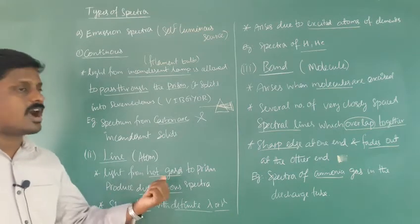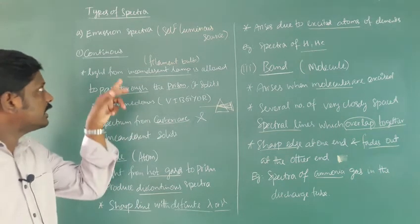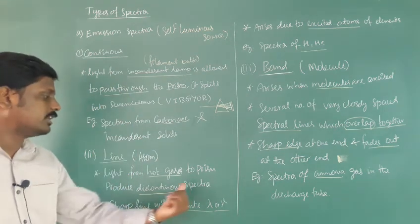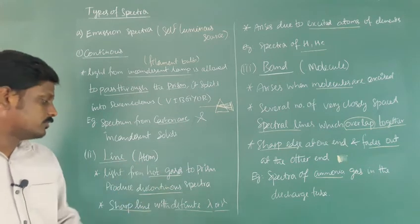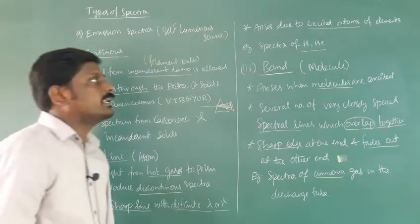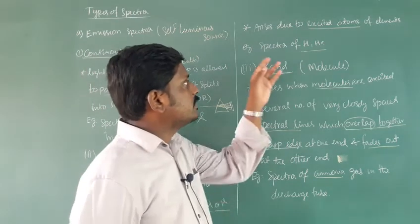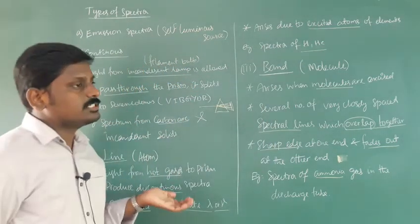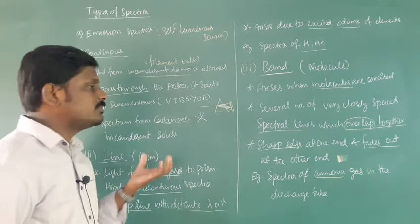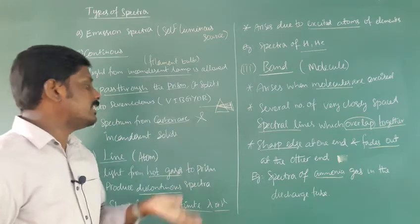Second, line emission spectra. Light from hot gases is allowed to pass through a prism and produces a discontinuous spectrum — it is opposite to continuous spectra. There is a breakage, with sharp lines of definite wavelength or frequency. It arises due to the excited atoms of elements. Example: spectra of hydrogen and helium. The line emission spectra is a characteristic of an element — it is different for different elements.